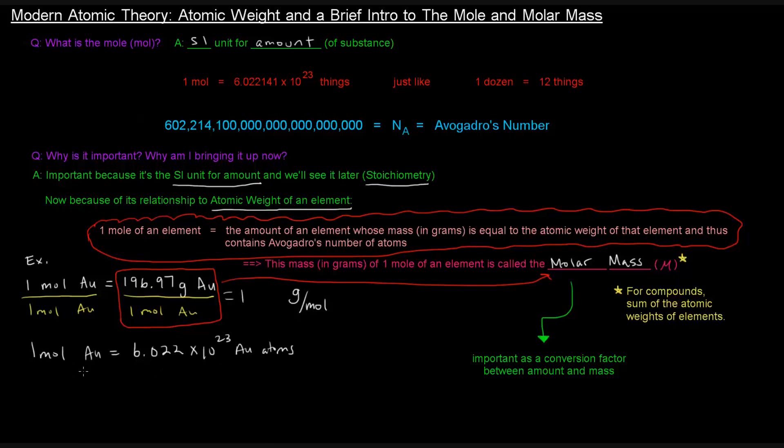So you can divide both sides by one mole here, one mole of gold, and get a conversion factor as well. So we can do that here. Divide by one mole of gold, divide by one mole of gold, and then we have here another conversion factor if we want to convert between moles and number of atoms.